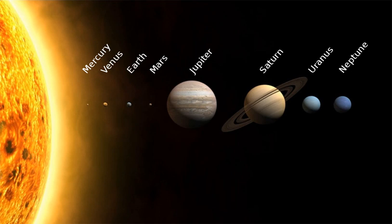6.1.2 Venus. Venus, 0.7 astronomical units from the Sun, is close in size to Earth — 0.815 Earth masses — and, like Earth, has a thick silicate mantle around an iron core, a substantial atmosphere and evidence of internal geological activity. It is much drier than Earth and its atmosphere is 90 times as dense. Venus has no natural satellites. It is the hottest planet with surface temperatures over 400 degrees Celsius — 752 degrees Fahrenheit — most likely due to the amount of greenhouse gases in the atmosphere. No definitive evidence of current geological activity has been detected on Venus, but it has no magnetic field that would prevent depletion of its substantial atmosphere, which suggests that its atmosphere is being replenished by volcanic eruptions.